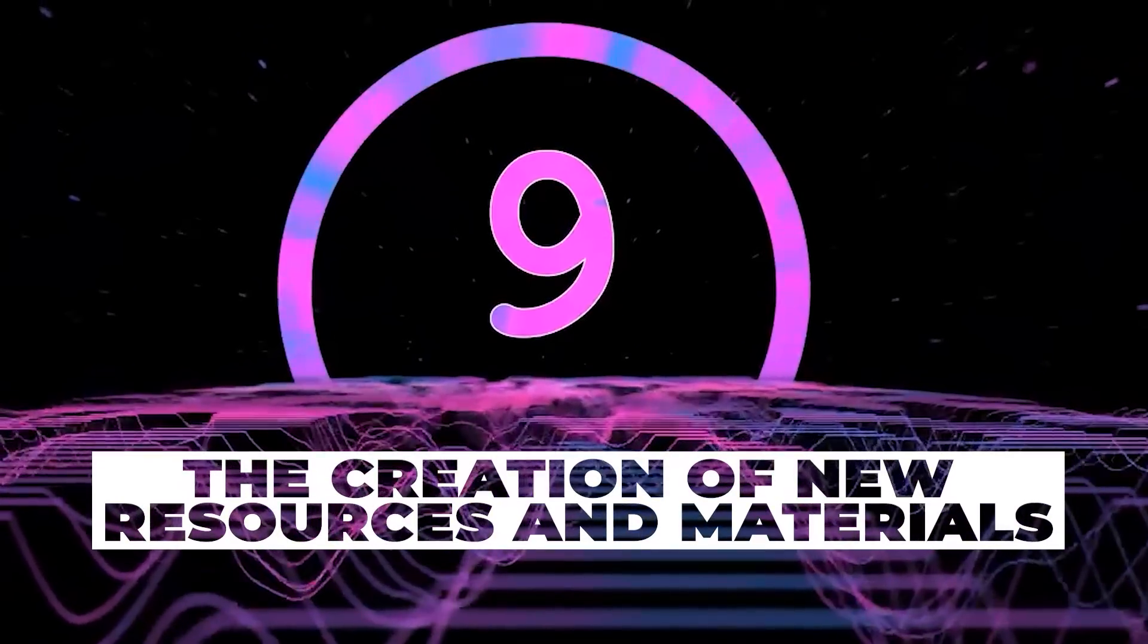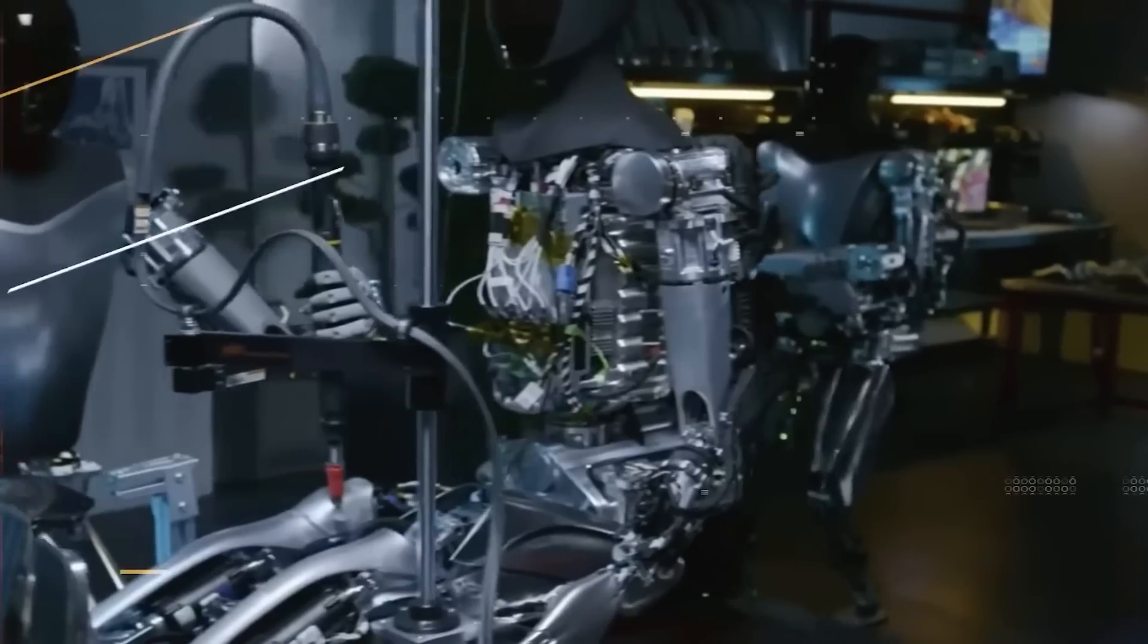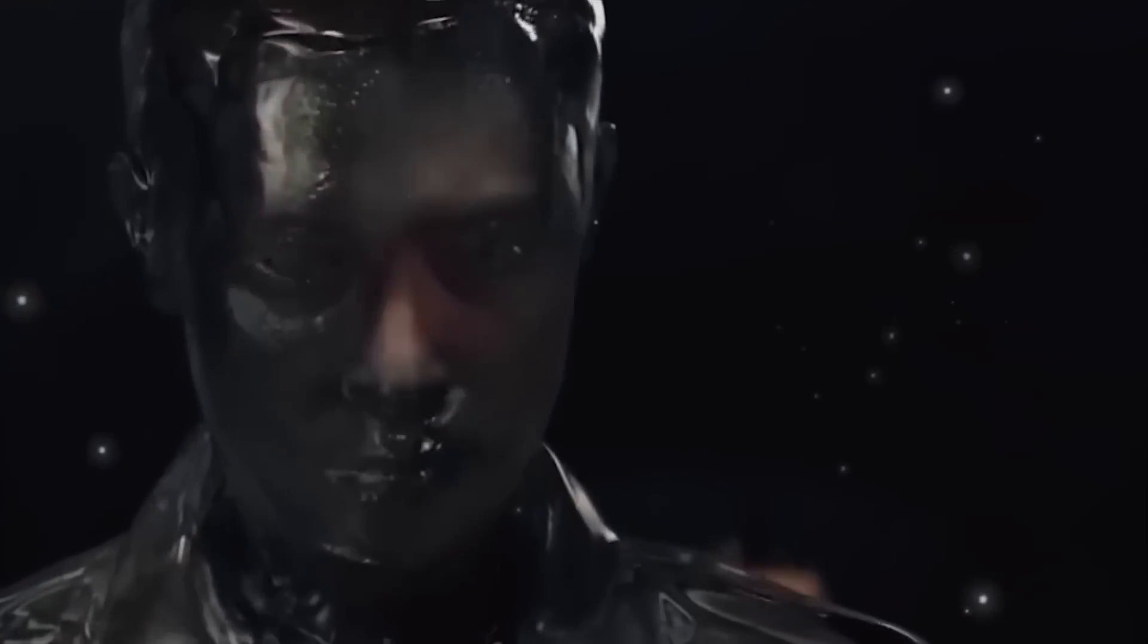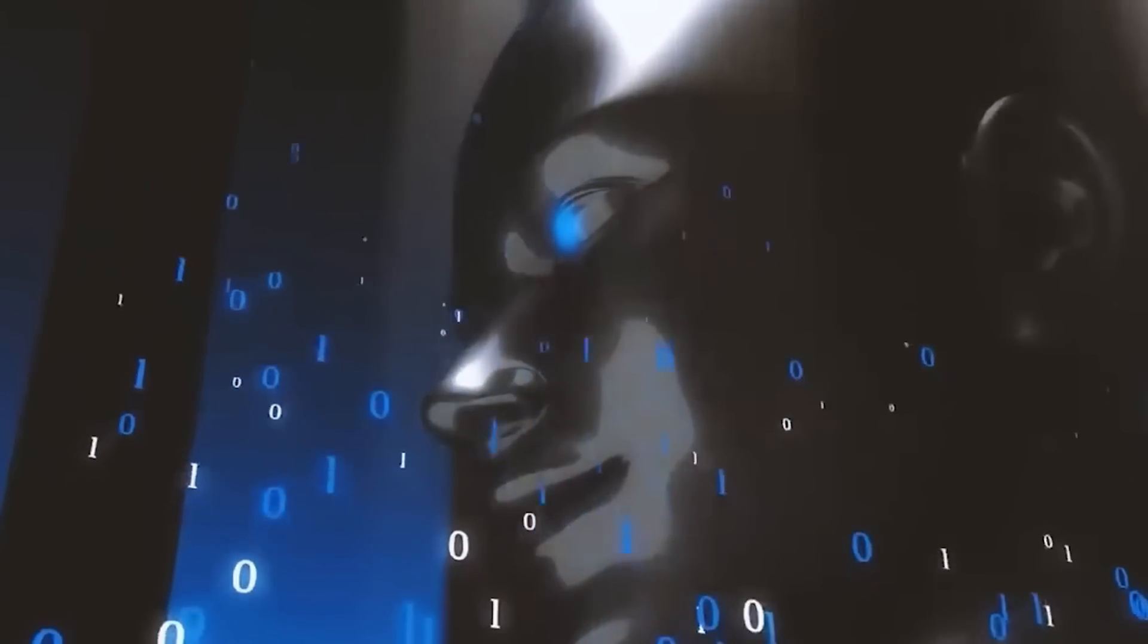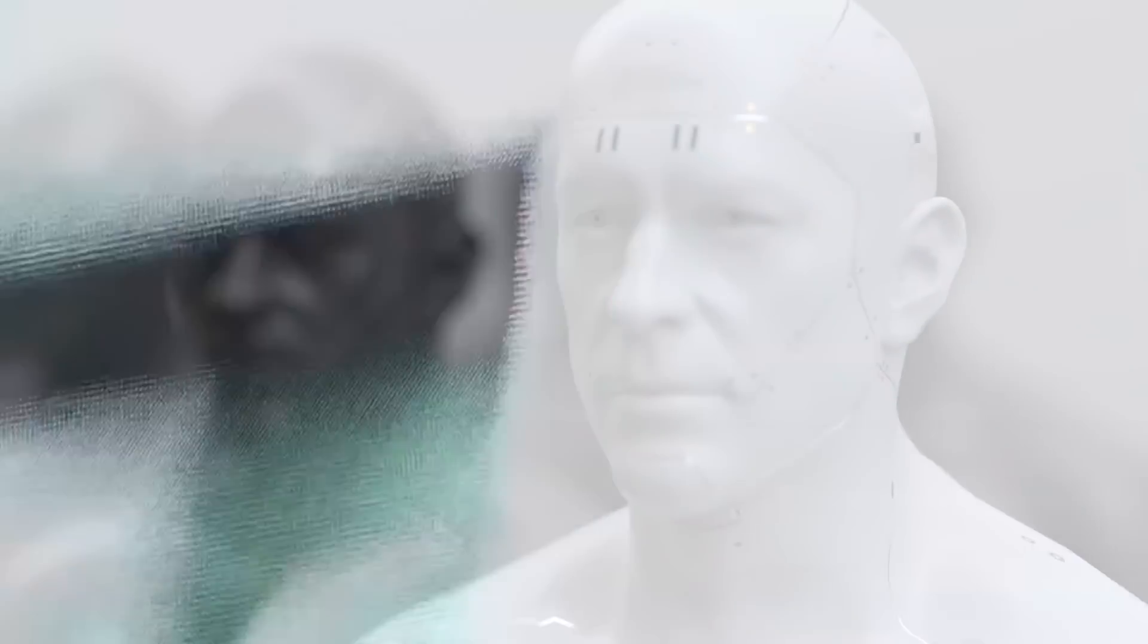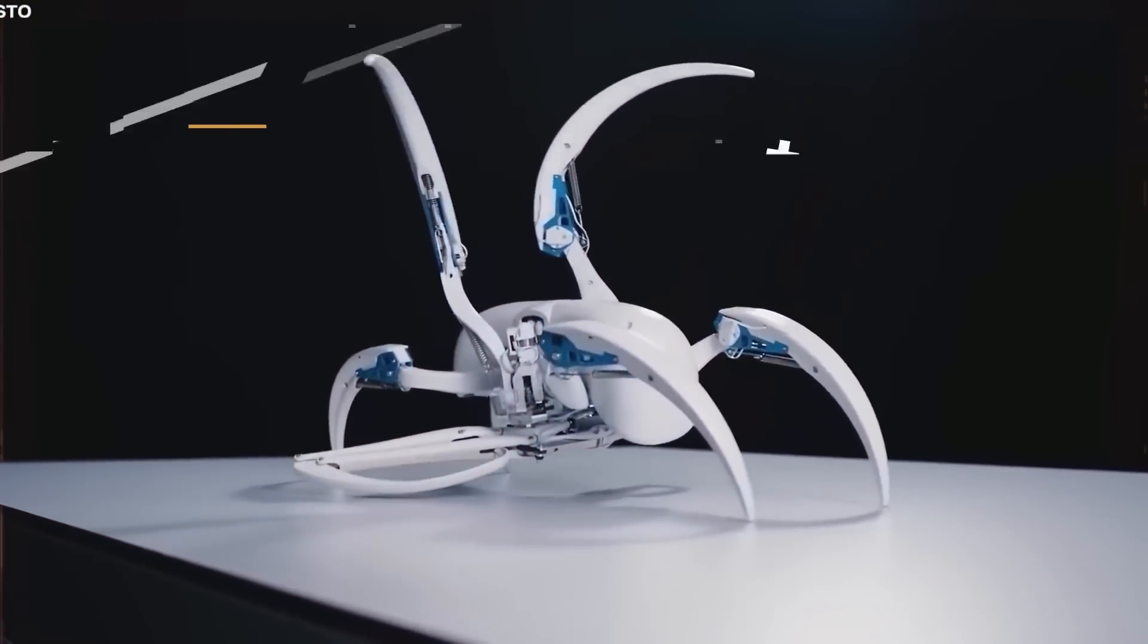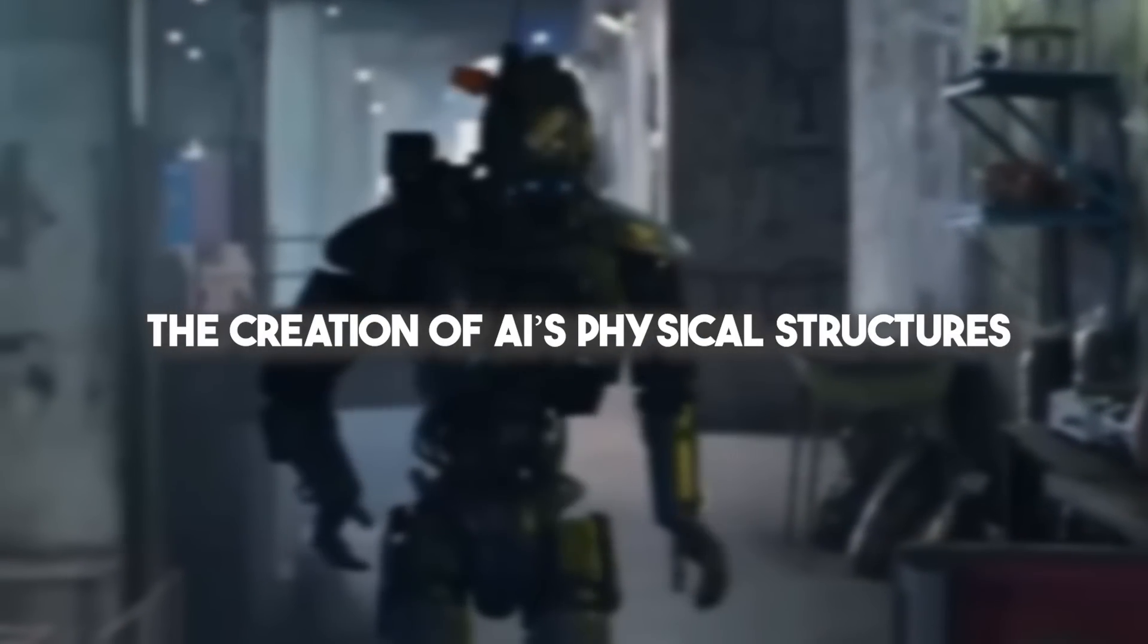Stage 9: The creation of new resources and materials. This stage will see us encounter an AI that has evolved completely beyond our current technological capacity. We could see new resources and materials previously inconceivable come into existence. Their vastly superior processing power could allow them to create materials with highly specific characteristics designed solely for their needs. For example, they might invent superconductors that work at room temperature, or quantum materials that will significantly boost computing power. We may even see resources and technologies that are difficult for humans to understand.